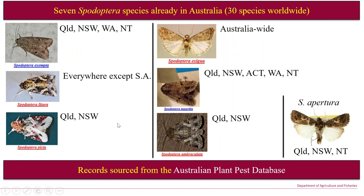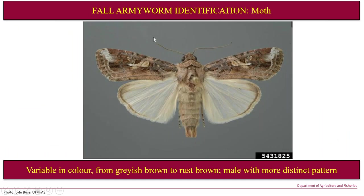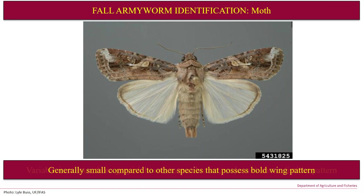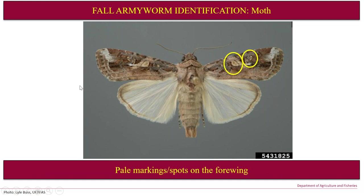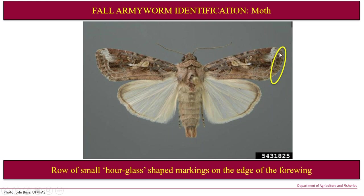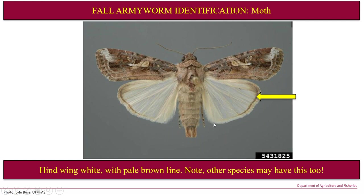Picta looks particularly different, as you can see. Moving on to the adult moth itself — they're variable in colour from greyish brown to rust brown. Males have a slightly more distinct colour pattern. They're generally smaller than other moths with similar bold wing patterns. If you do have a moth in good condition, you can look for pale spots, as circled here — quite indistinct — or a row of hourglass-shaped markings on the very edge of the forewing. They also have very white hind wings with a narrow grey-brown band on the edge.